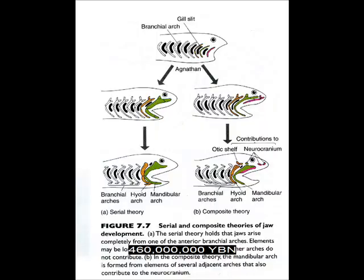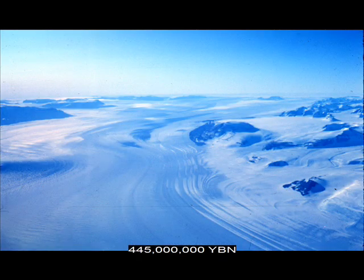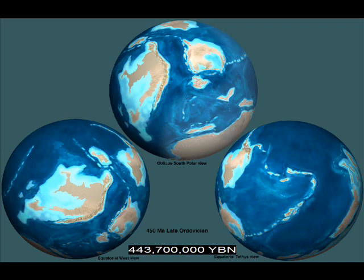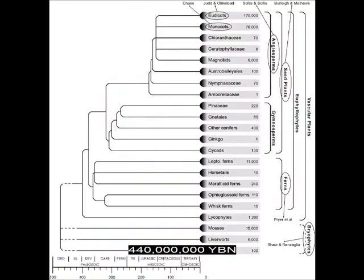Jawed fishes chondrichthyes — cartilaginous fishes, ancestor of all sharks, rays, skates, and sawfishes. Mass extinction caused by ice age. End of the Ordovician and start of the Silurian period. Vascular plants evolve. Jawed fishes ray-finned fishes evolve. The first lung evolves from the swim bladder in ray-finned fishes. Jawed fishes lobe-finned fishes evolve — coelacanths. Arthropods hexapods — arthropods with six legs (three pairs), includes all insects. Lobe-finned fishes, lung fishes.